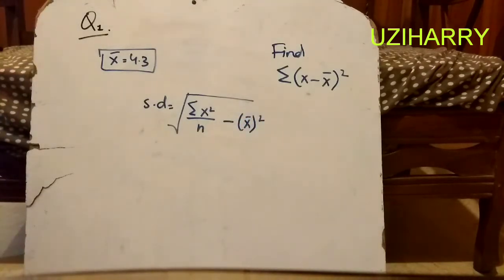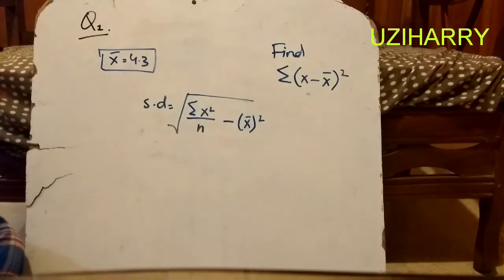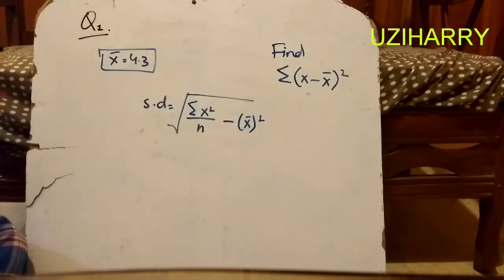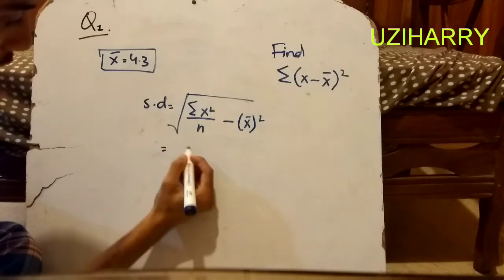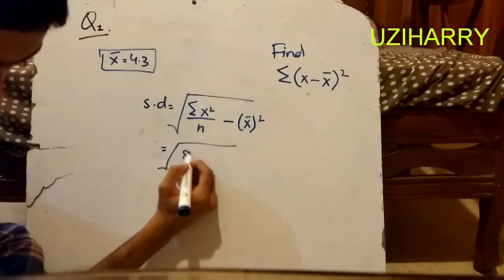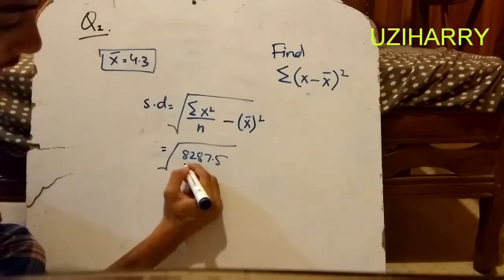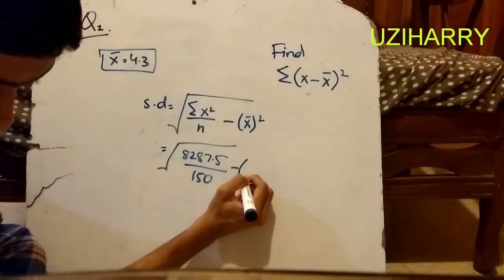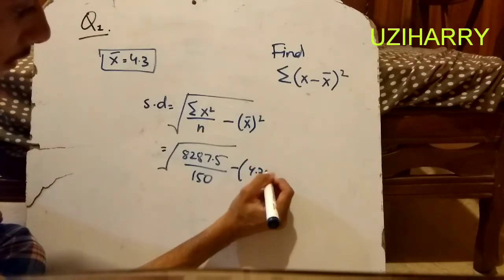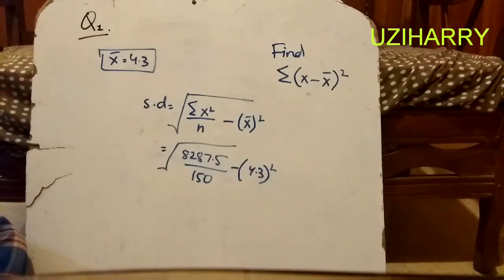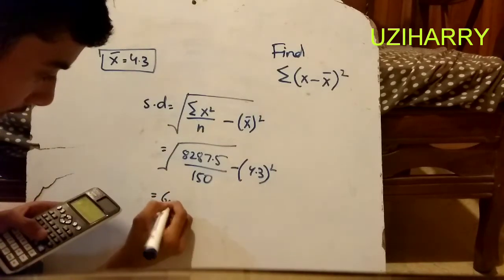Now we are going to find the standard deviation of the data. After finding the standard deviation, we can apply it with respect to the coded set of values. The formula is square root of 8287.5 divided by 150, minus the mean 4.3 whole square. We have found the standard deviation that is 6.06.